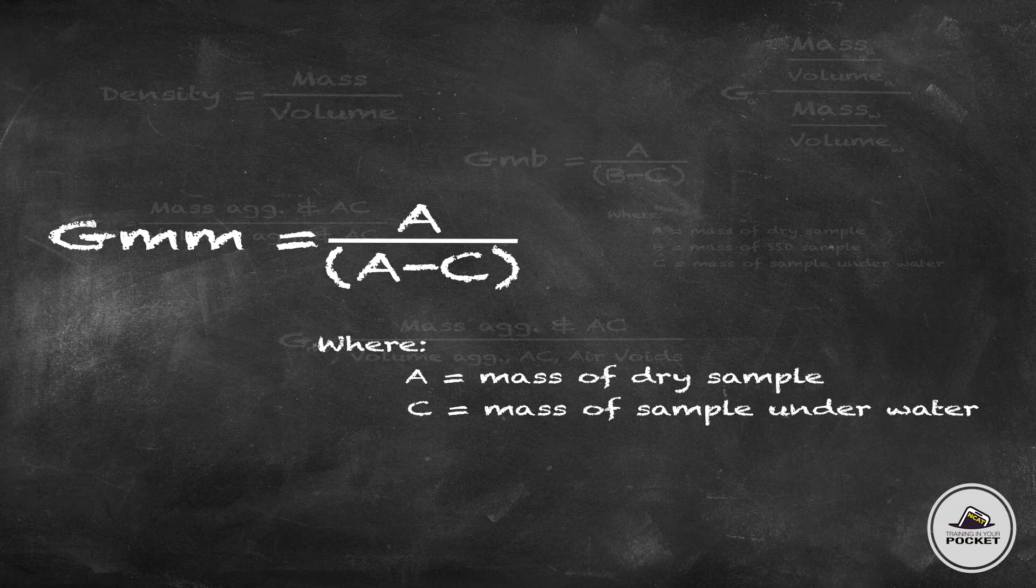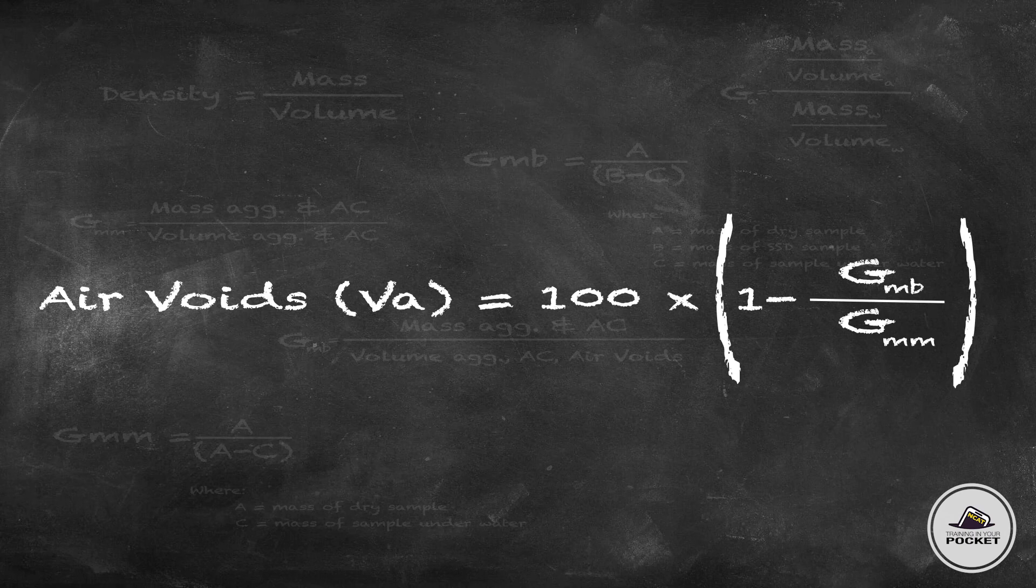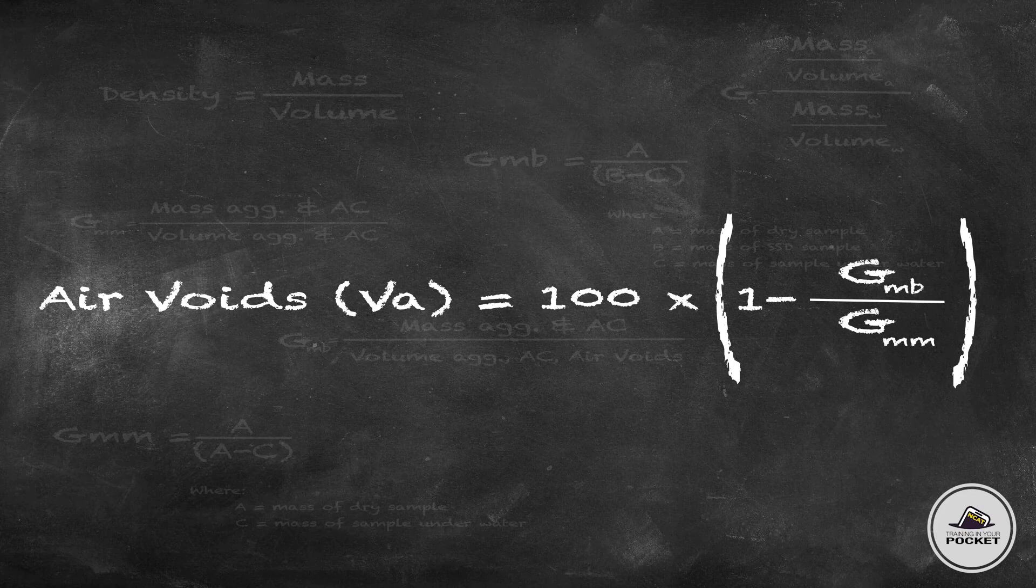So that's just mass over volume, isn't it? It is. So now that we can calculate the GMM and the GMB, where do we go from here? I'm glad you asked. They're both very important. We do a lot of things with them, but the first thing we're going to do is we're going to figure out the volume of air.